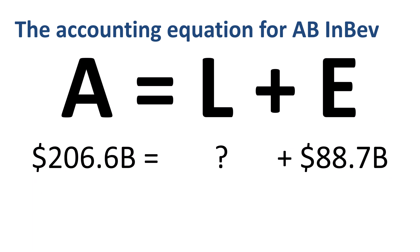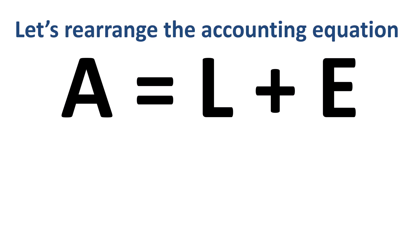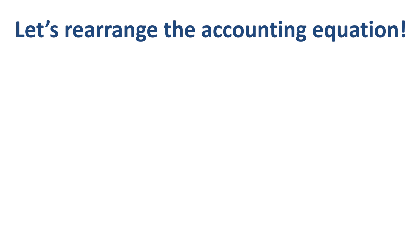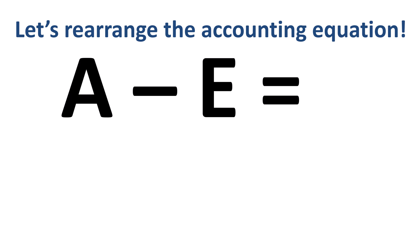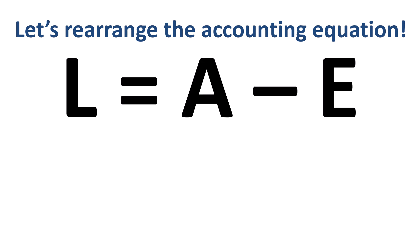What if the liabilities number is not given in a problem you need to solve? If assets and equity are known, we can calculate liabilities by rearranging the accounting equation. We move the E of equity from the right of the equals sign to the left: A equals L plus E becomes A minus E equals L. Let's move L to the front: L equals A minus E.